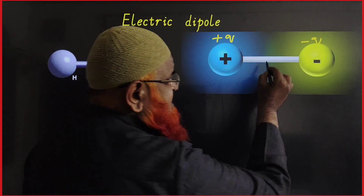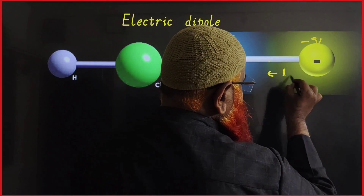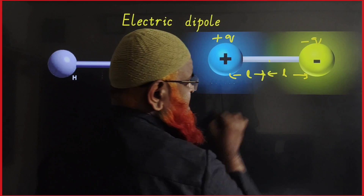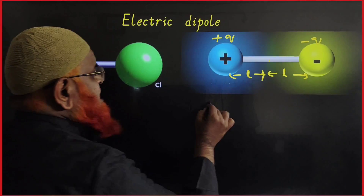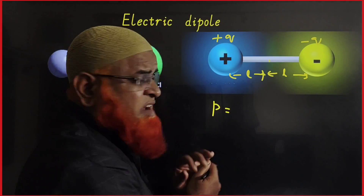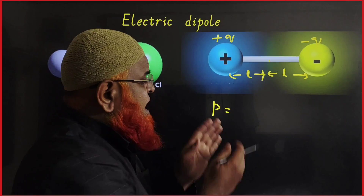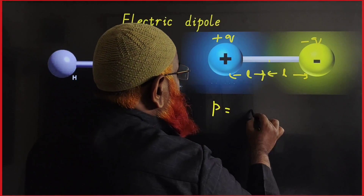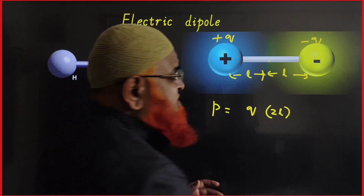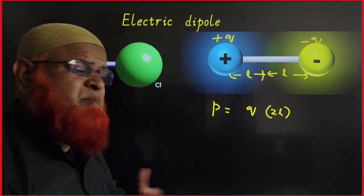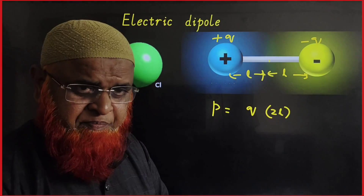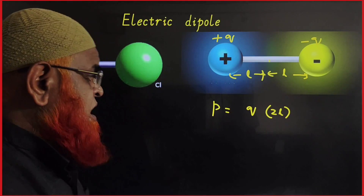That distance is taken from here to here as L and from here to here as L. You know that electric dipole is given by the letter small p. The definition is: electric dipole is the product of any one of the charges and the distance between them.